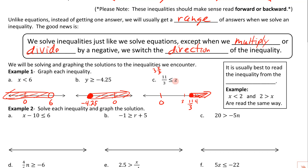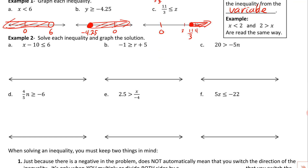Just as a reminder: it's usually best to read an inequality from the variable. Both of these are exactly the same — x is less than 2, or 2 is greater than x. If you read it backwards, x is on the small side of the point, so x is less than 2. They're read the same way. Practice that and you'll be in really good shape.